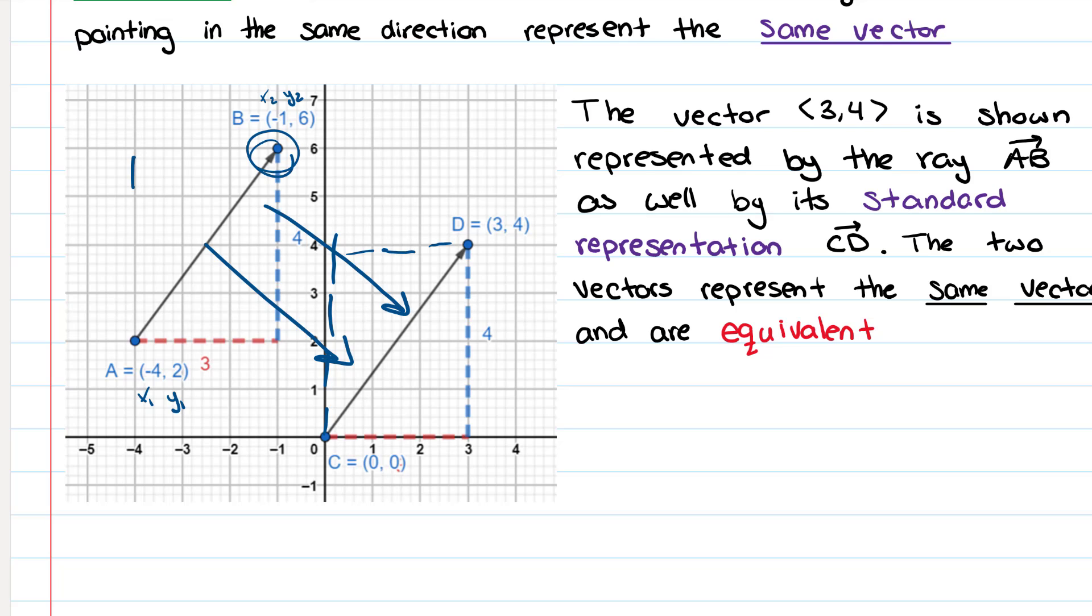We have this here. So then it is going to be pointy bracket, negative 1 minus negative 4 comma 6 minus 2. So this is going to give me negative 1 plus 4 comma 4 which is 3 comma 4. Which is the same as this vector here.